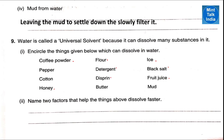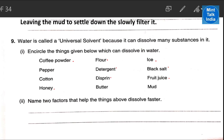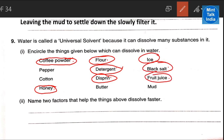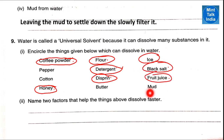Encircle the things given below which can dissolve in water. In water we can dissolve: coffee powder, honey, flour, detergent, Disprin, ice, black salt, and fruit juice. Mud will not get dissolved — it will settle down in water. Butter will float on water. Pepper will also float on water, and cotton will also float on water.